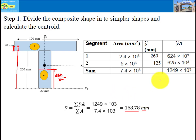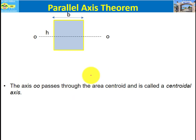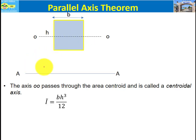Now for the moment of inertia, I'd like to revise one important theorem — the parallel axis theorem. This is important when calculating the moment of inertia for composite bodies. If we know the moment of inertia about any axis, we can determine the moment of inertia about any axis parallel to it. For example, if line A-A is parallel to axis O-O, we can determine the moment of inertia about A-A.